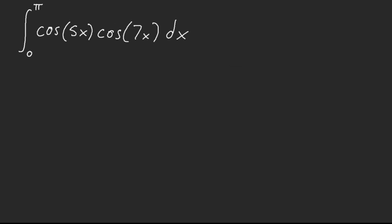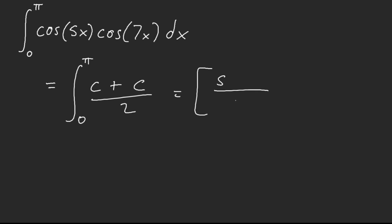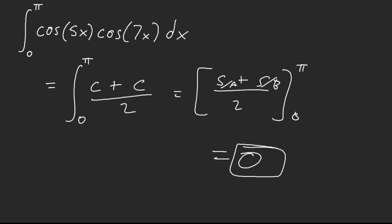Let's do this one. This is cosine times cosine — cosine cosine gives a cosine plus cosine identity. When you integrate it, it becomes sine plus sine with whatever coefficients. When I plug in 0 and π, they just cancel each other out and equal 0.